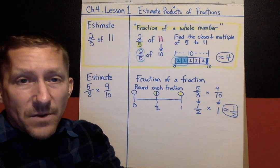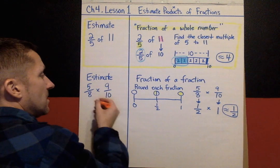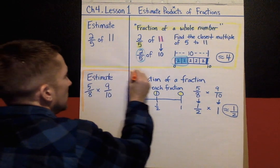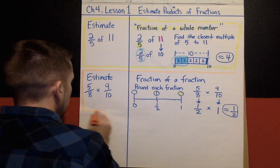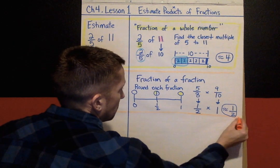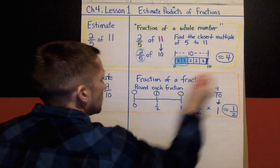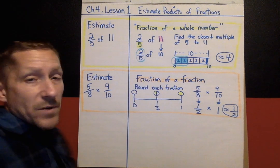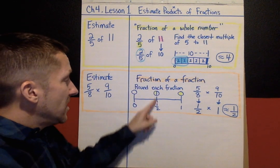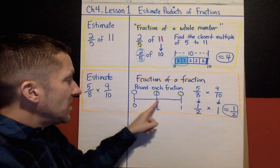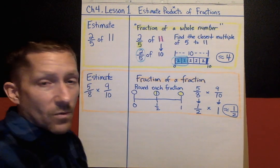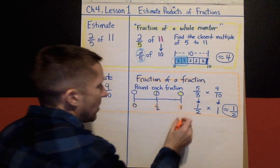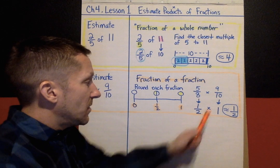I'm going to put an orange box around this example. On today's practice, when you have a fraction times a fraction, use this strategy: round each fraction to either zero, a half, or one — whatever it's closest to — and then multiply with those estimates.